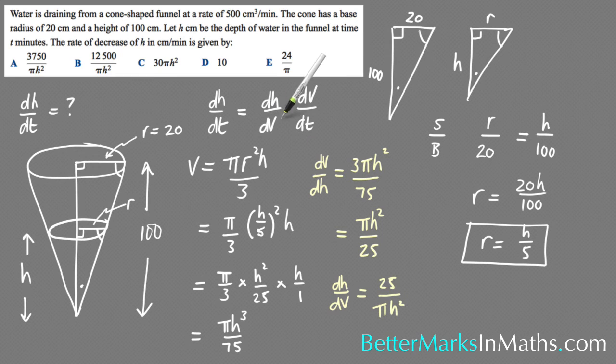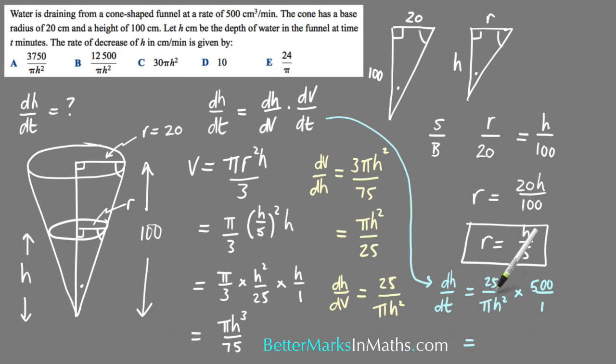And then from this formula, coming down to here, dh/dt: dh/dt is equal to dh/dV, which is this one here, so 25/(πh²) multiplied by dV/dt, which is this rate here, 500 centimeters cubed per minute. So I'm just going to put 500, and that's over 1. And 5 times 25 is 125, adding the two zeros, and then on the bottom, πh² times 1 is πh². So that's the rate that you're after, dh/dt, and that is answer B.